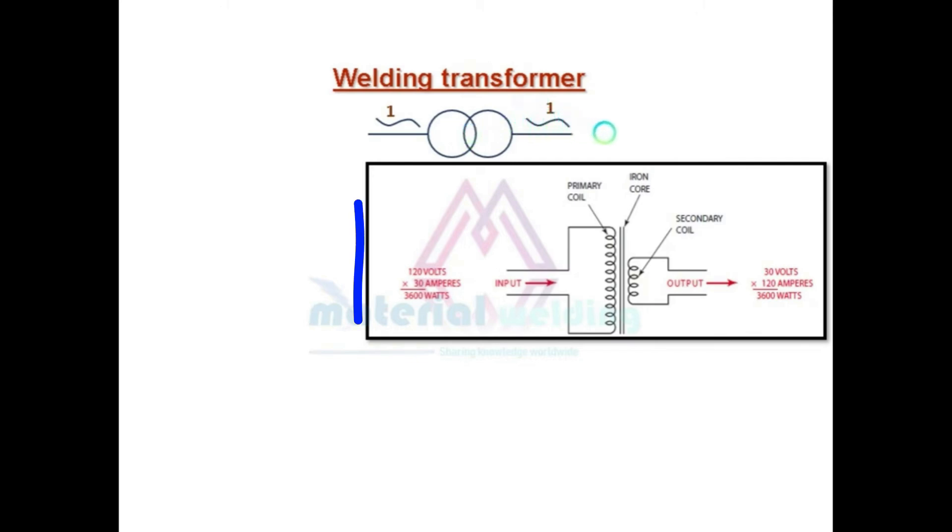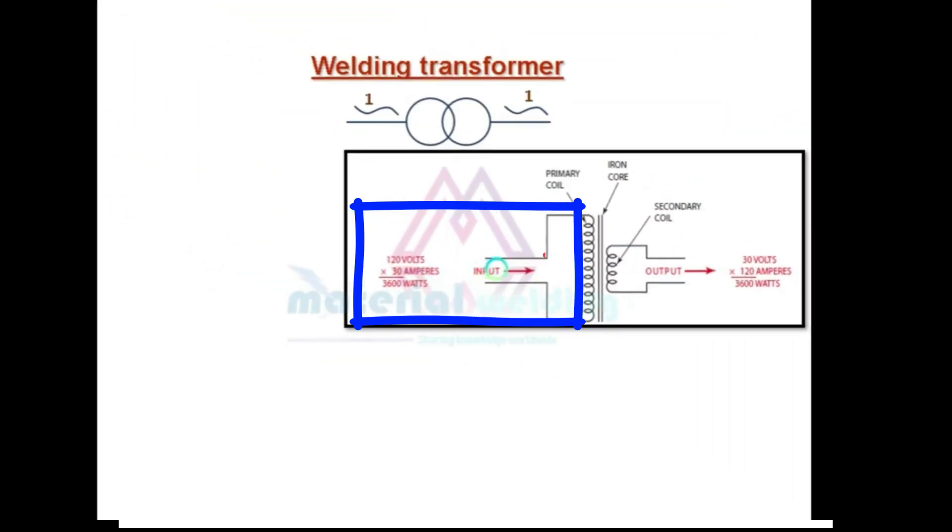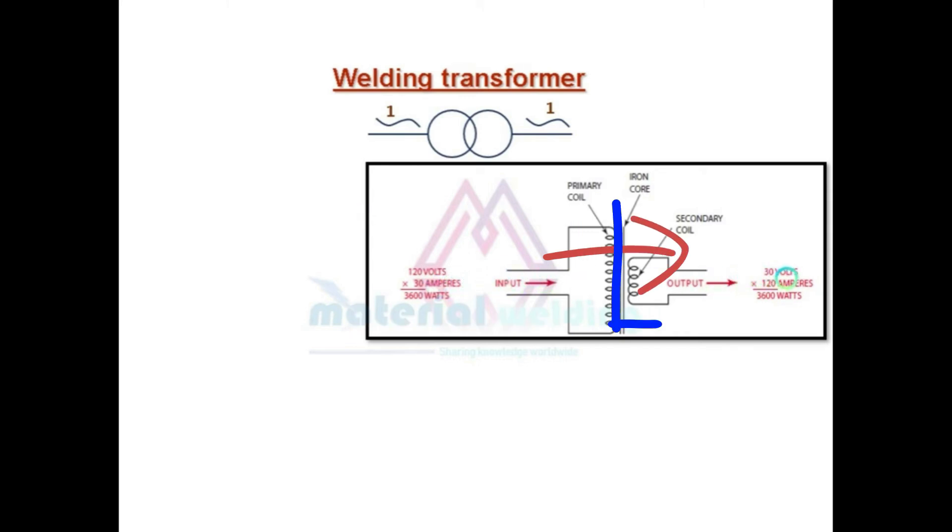With this example we can see that 120 volts and 30 ampere single phase alternating current is changed to 30 volts and 120 amperes using a simple transformer device. So basically a high voltage and low current is changed to low voltage and high current to minimize the electric shock hazard and suitability for the welding operation.